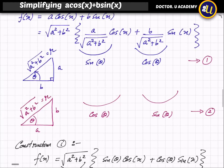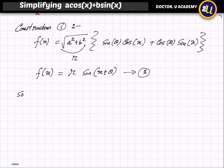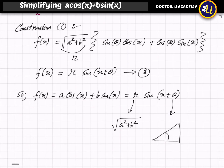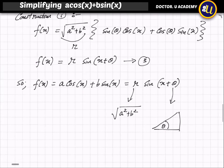So finally, f(x) = a·cos(x) + b·sin(x) can be simplified to R·sin(x + θ). Here R equals √(a²+b²) in terms of a and b. The angle θ is defined from the right-angle triangle where the opposite side is a, the adjacent side is b, and the hypotenuse is √(a²+b²).